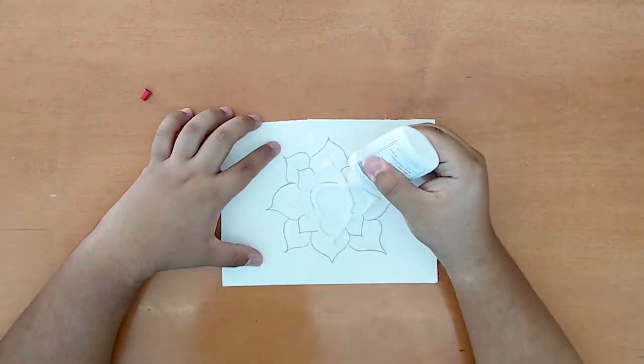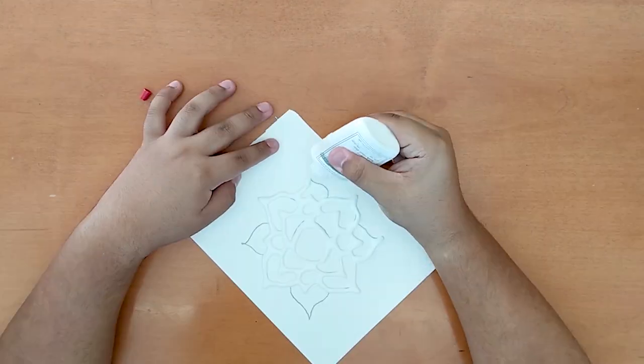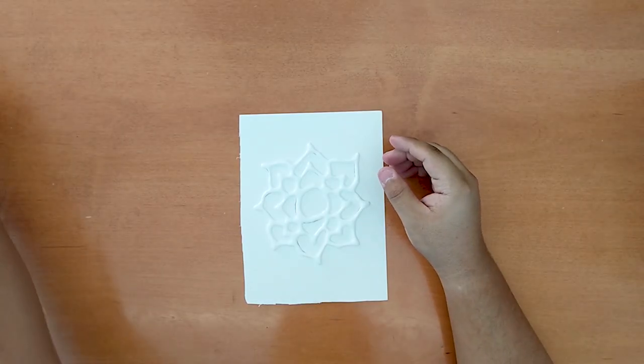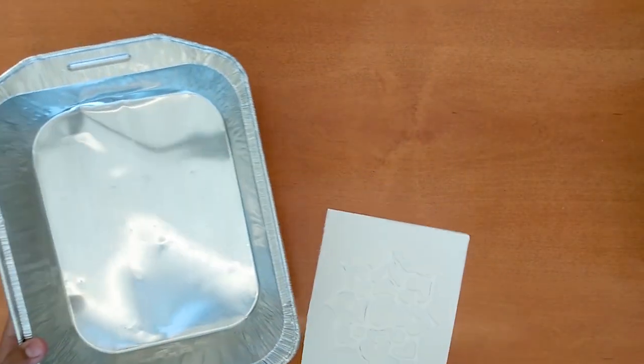Next, take the glue and start tracing over the sketch. Try to follow along the line drawing so that it will look as clean as possible. Take the tray or newspaper and place it in front of you. Place the paper inside the tray or on top of the newspaper for easy cleanup.